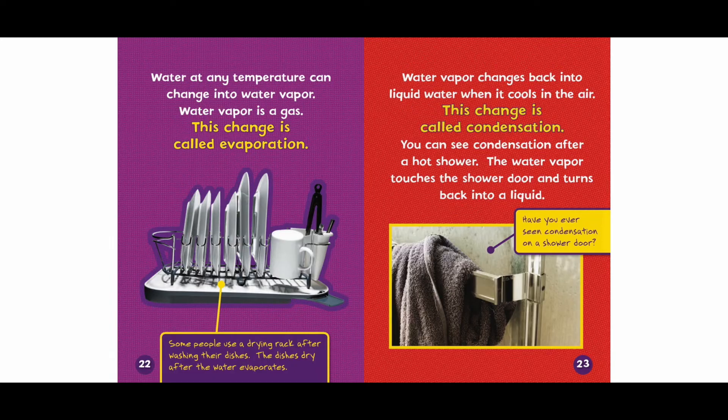Some people use a drying rack after washing their dishes. The dishes dry after the water evaporates. Water vapor changes back into liquid water when it cools in the air — this change is called condensation. You can see condensation after a hot shower, when water vapor touches the shower door and turns back into a liquid.